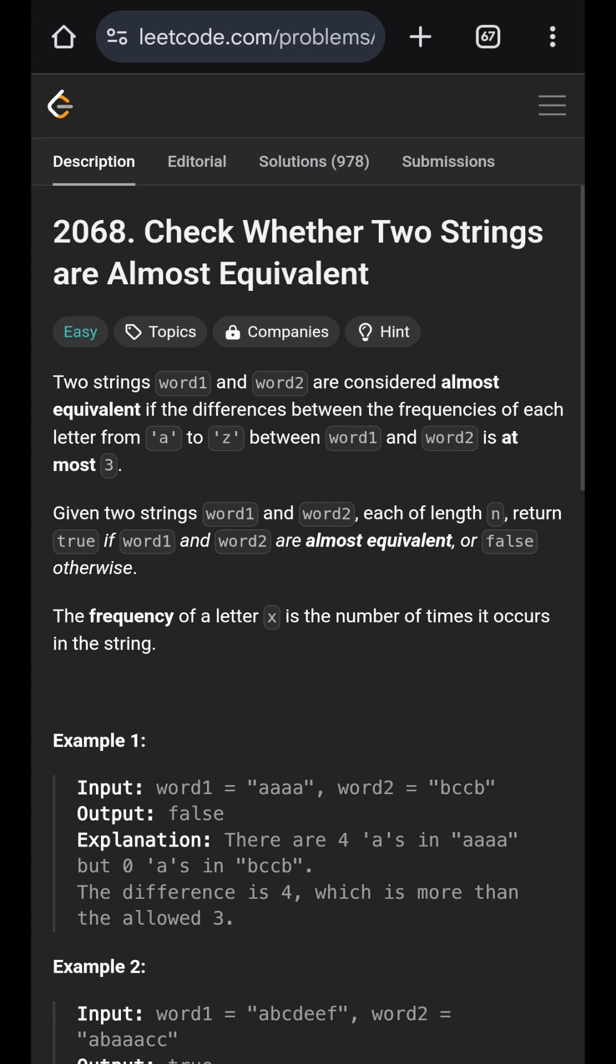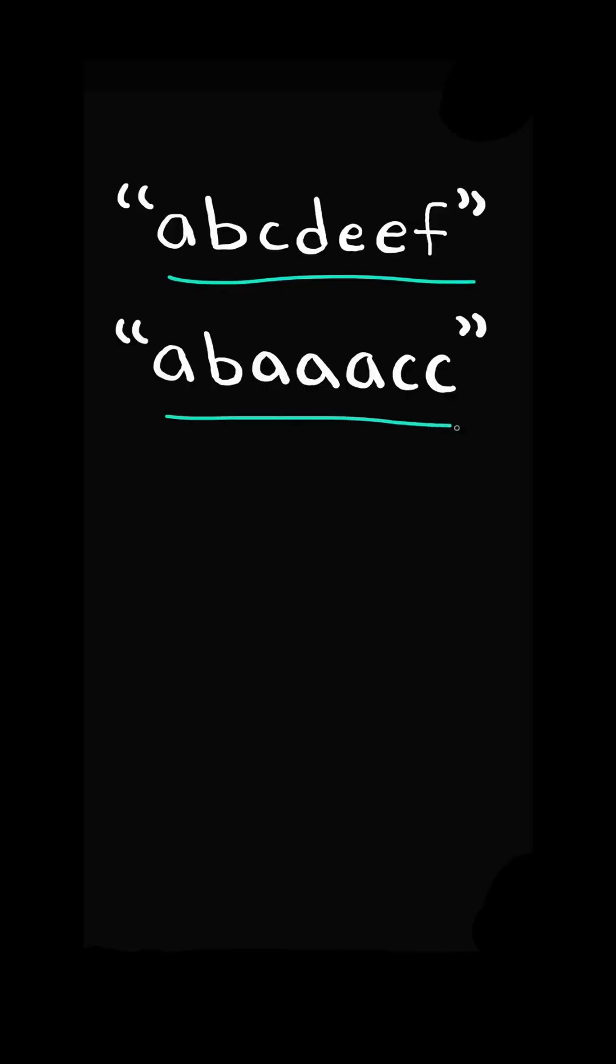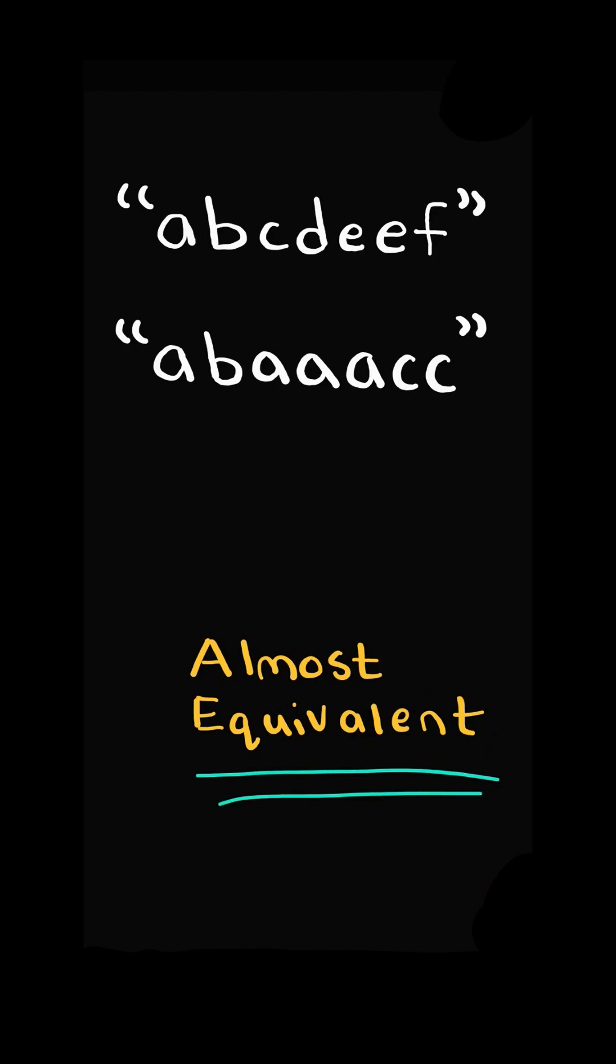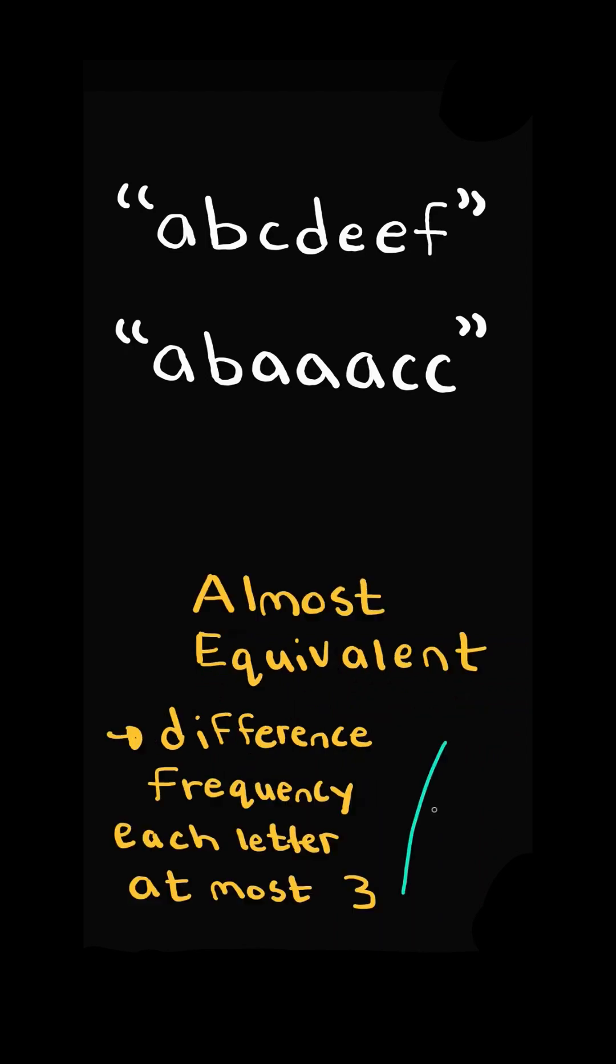Check whether two strings are almost equivalent. Given two strings, string 1 and 2 are almost equivalent if the difference of frequency of each letter is at most 3.